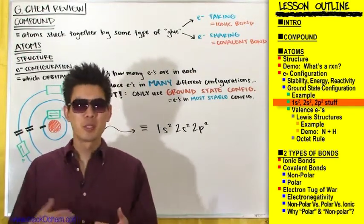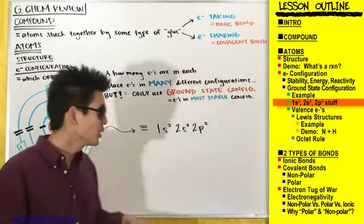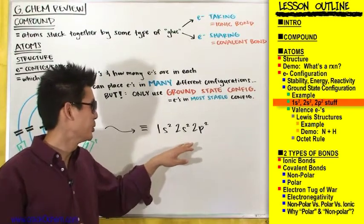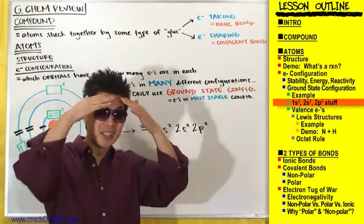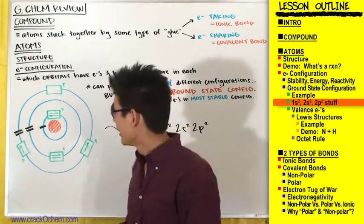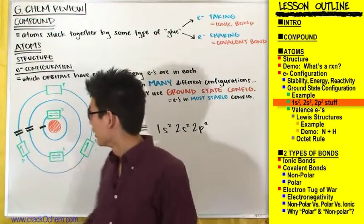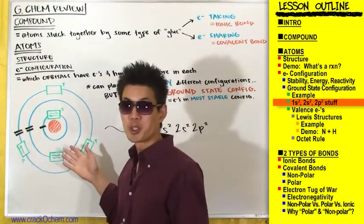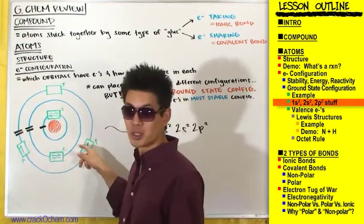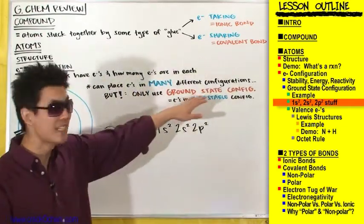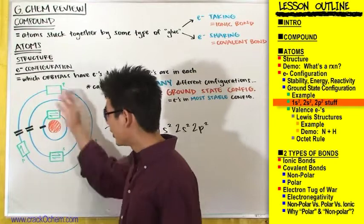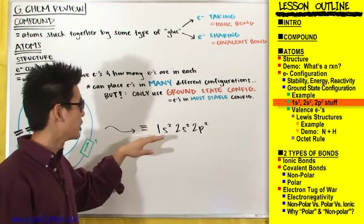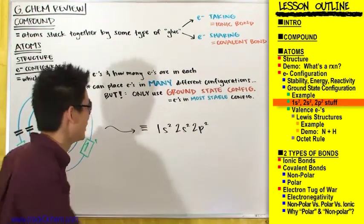One more thing to mention: when talking about electron configuration, you'll also see notation like 1s² 2s² 2p². This used to confuse me in general chemistry, but it turns out this is just a shortcut for drawing out the entire structure of the atom. You're welcome to draw the full orbital diagram, but if you'd rather avoid all those circles and boxes, you can use this shorthand instead.